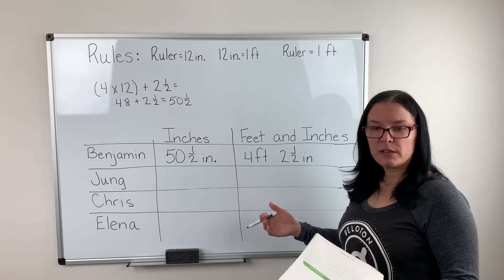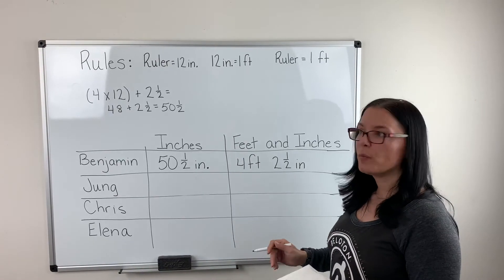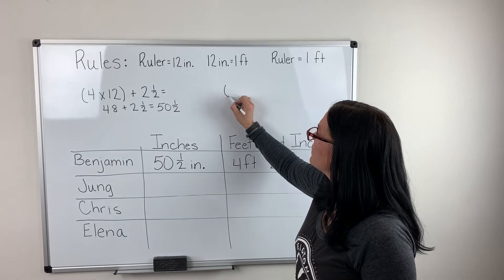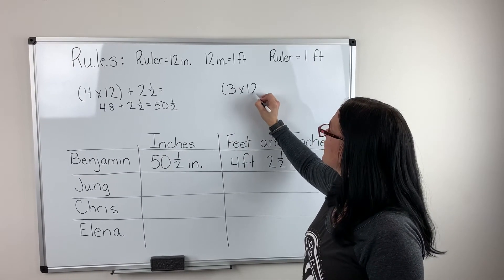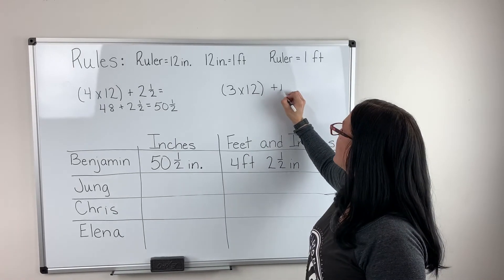We're going to look at Jung's jump as well. She did three rulers and four more inches. We're going to use our same equation, except we're going to do three rulers and then add the four more inches.